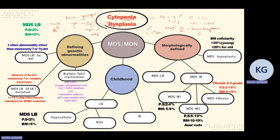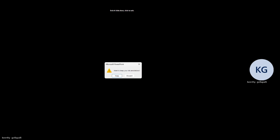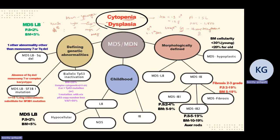To assess dysplasia, you must count at least 200 cells in the peripheral smear and 500 nucleated cells in the bone marrow. Then check how many cells show dysplastic features in the erythroid, myeloid, or megakaryocytic series. At least 10% of those cells must show dysplastic features to call it dysplasia. The old WHO classification based on single vs. multilineage dysplasia is now optional.